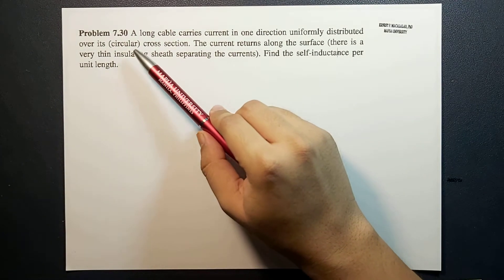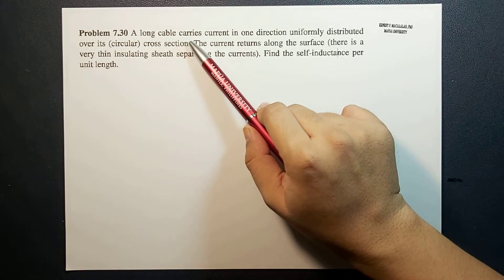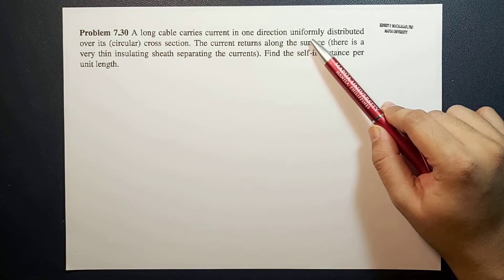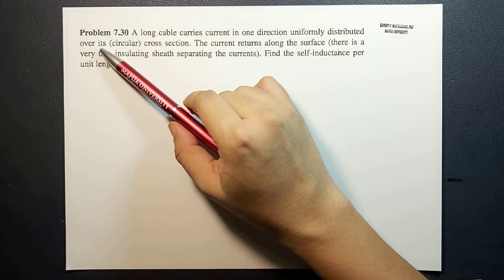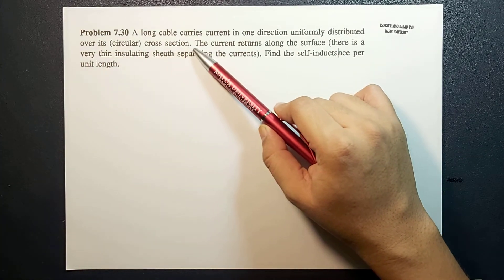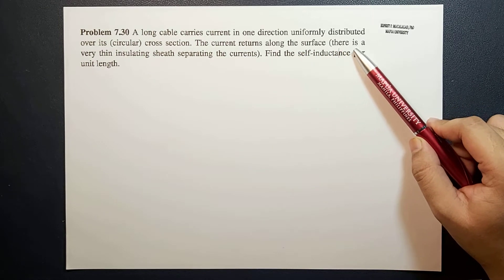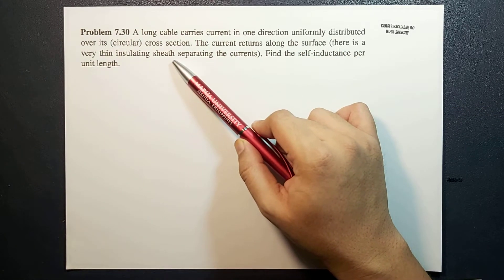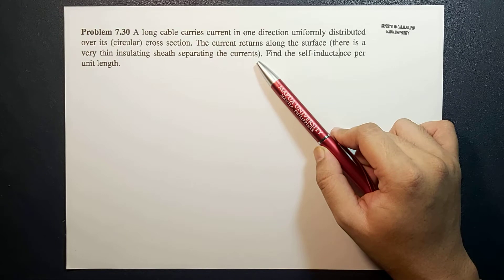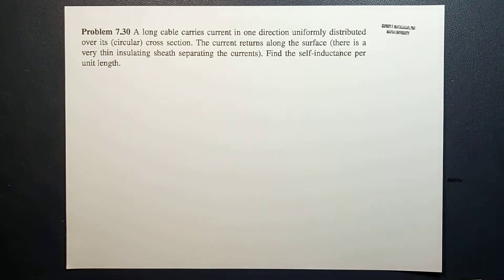The problem reads: a long cable carries a current in one direction, uniformly distributed over its circular cross-section. The current returns along the surface, so there is a very thin insulating sheath separating the currents. Find the self-inductance per unit length.